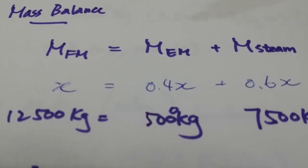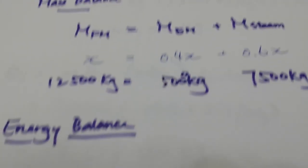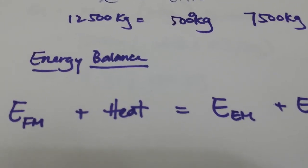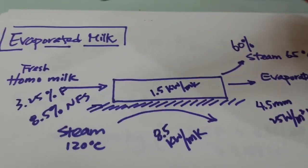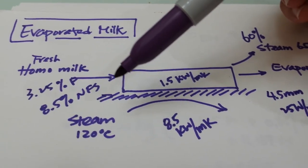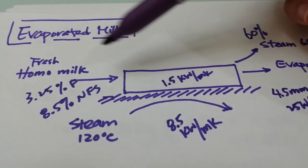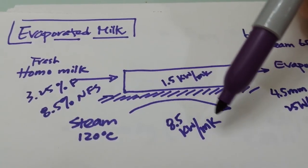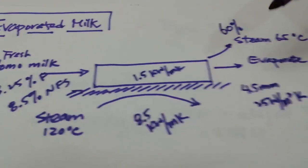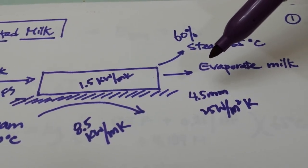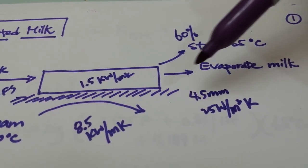And then the second step that we can think of is in terms of energy balance. Based on the graph here, we have a few things happening. We have the milk that is already warmed to 65 degrees Celsius. So if we know the enthalpy of this milk plus the energy that is provided by the steam, our end product will be the enthalpy of the evaporated milk.